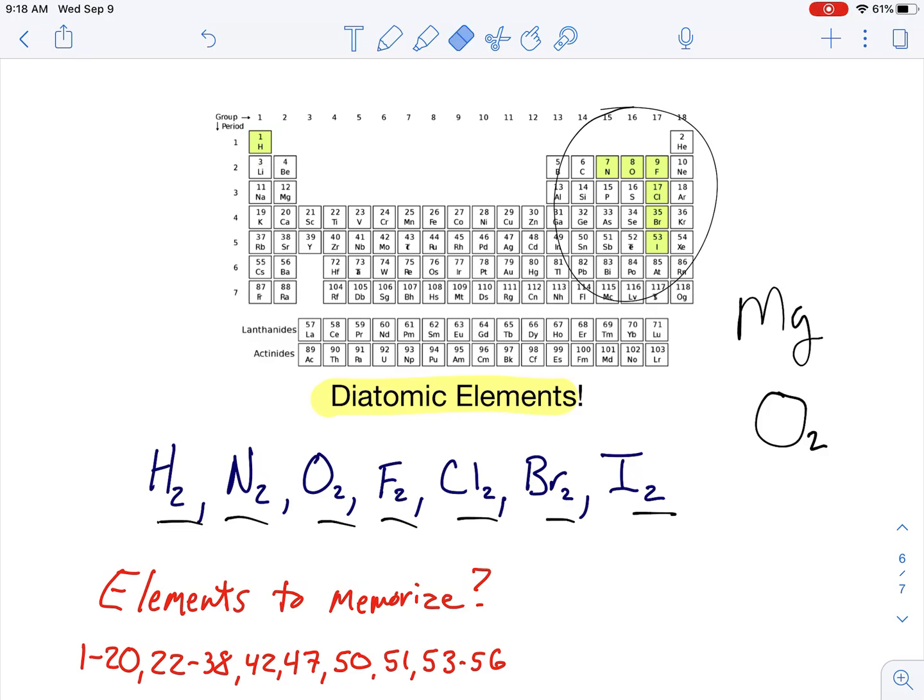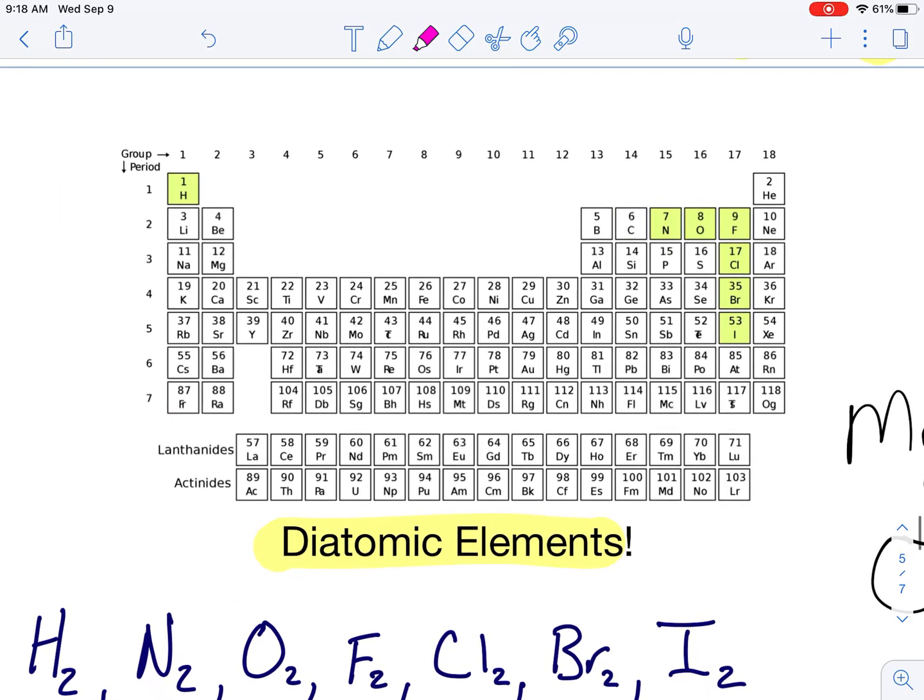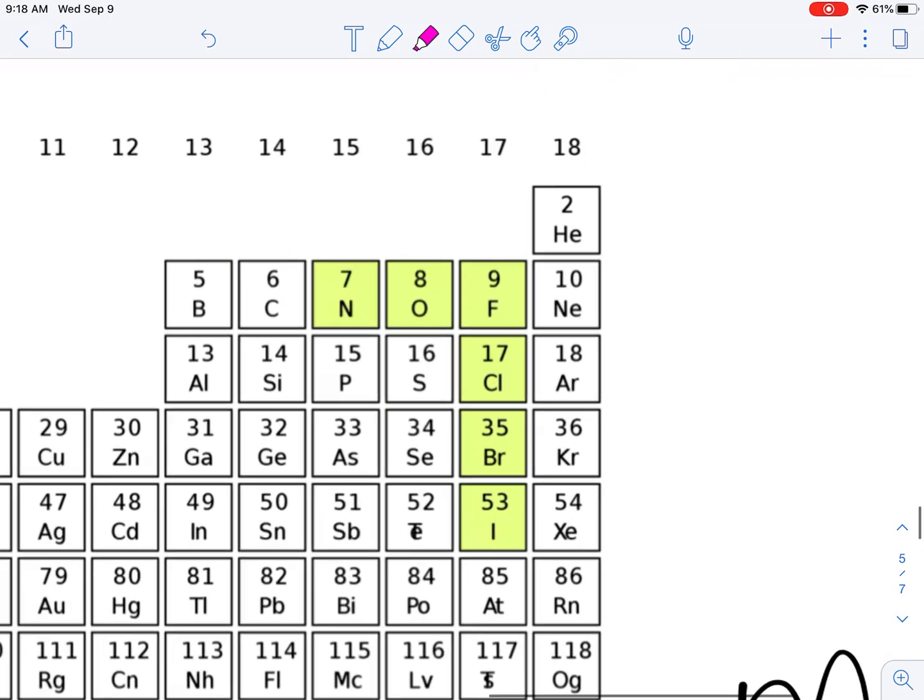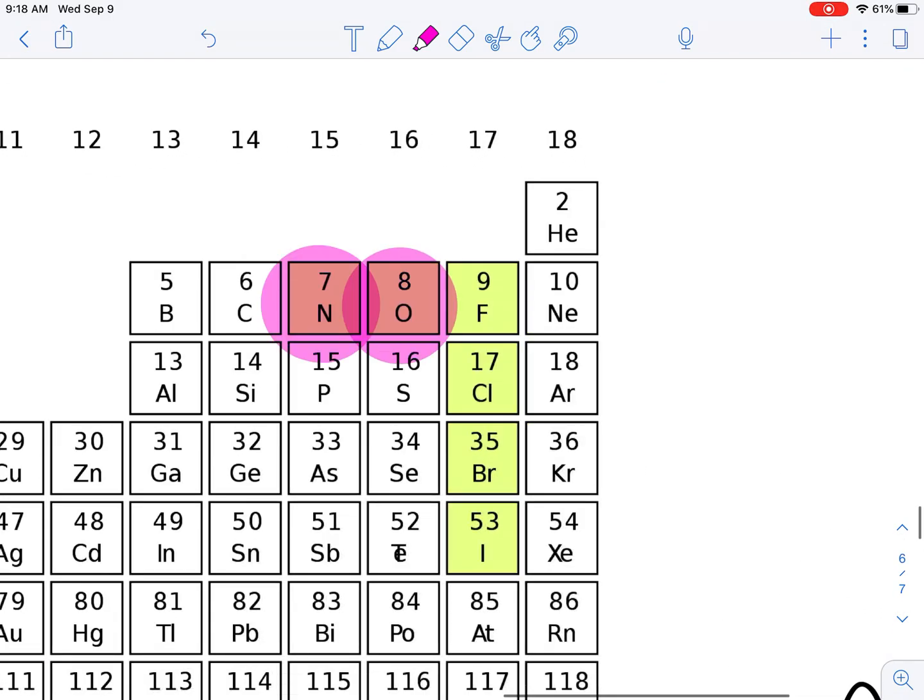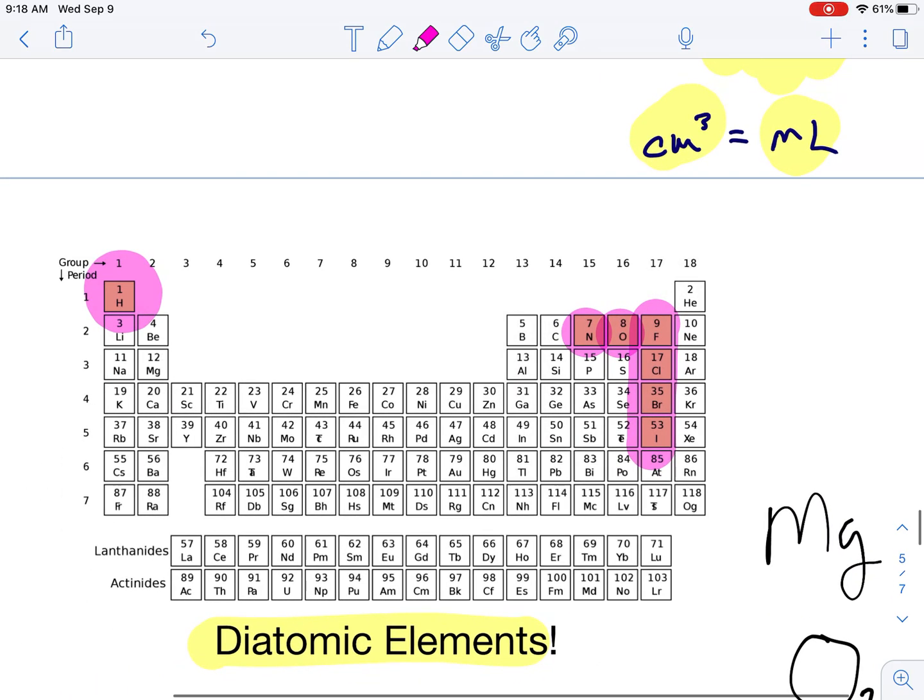Another way you can think about it is heck no down the next row. Heck no. Heck starts with H. No. There's the word no. Down the next row. That's another way to memorize the 7 diatomic elements.